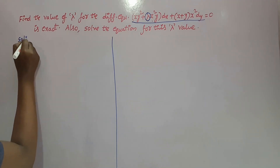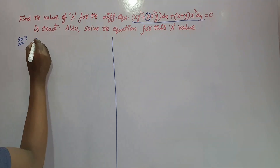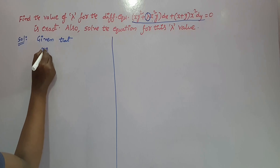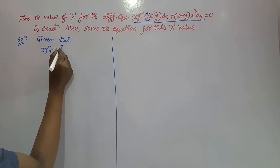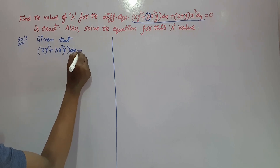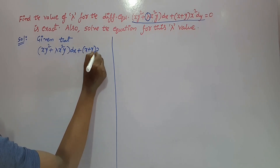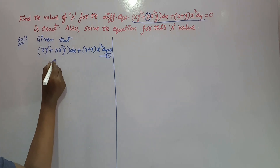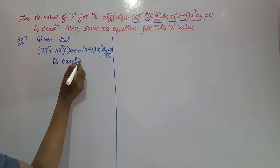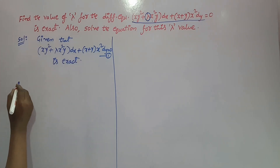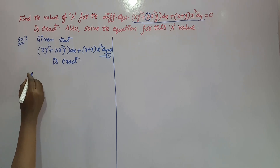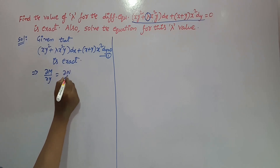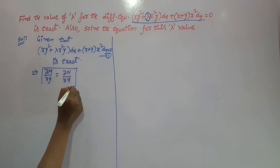First, write the given equation. Given that x y squared plus lambda x squared y into dx plus (x plus y) whole into x squared dy is equal to 0 — take it as equation number 1. This equation is exact, so what is the condition for exactness? ∂M/∂y is equal to ∂N/∂x. By using this condition we can get the value of lambda.